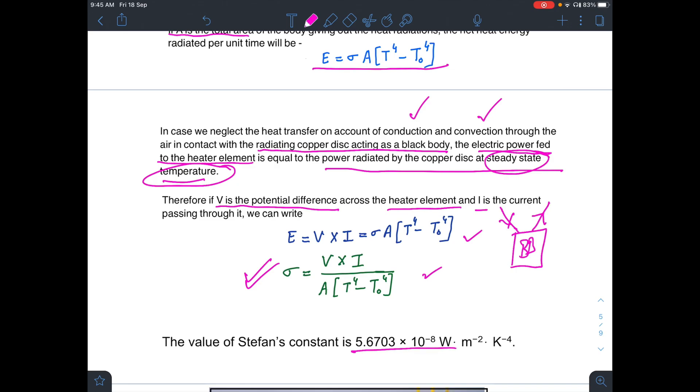The standard value of Stefan's constant is 5.6703 times 10 to the power minus 8 watt per meter square per Kelvin to the power 4.